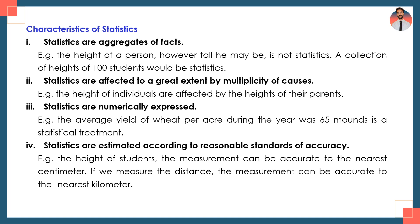Every fact that is expressed numerically is a statistical treatment. For example, average yield expressed as 65 maunds is a numerical expression. If you explain heights as 65 inches, that is numerically expressed. If you say the weight of students is 65 kg, that is called statistical treatment. So the fourth characteristic: statistics are estimated according to a reasonable standard of accuracy.